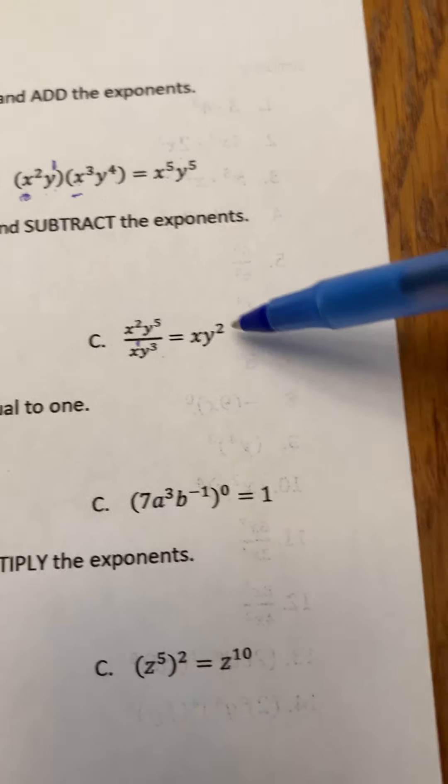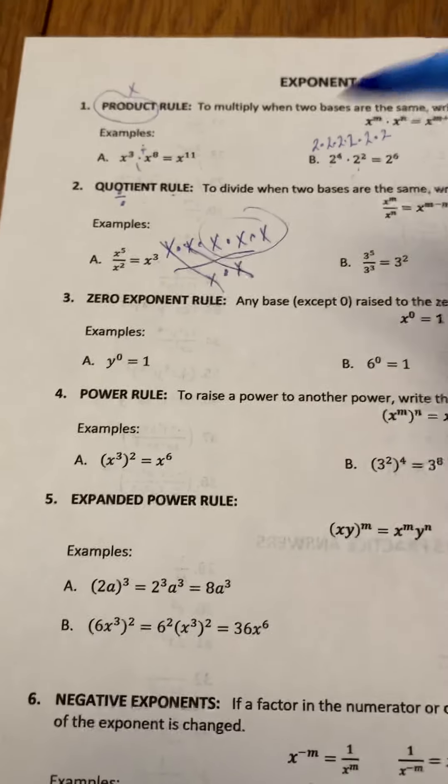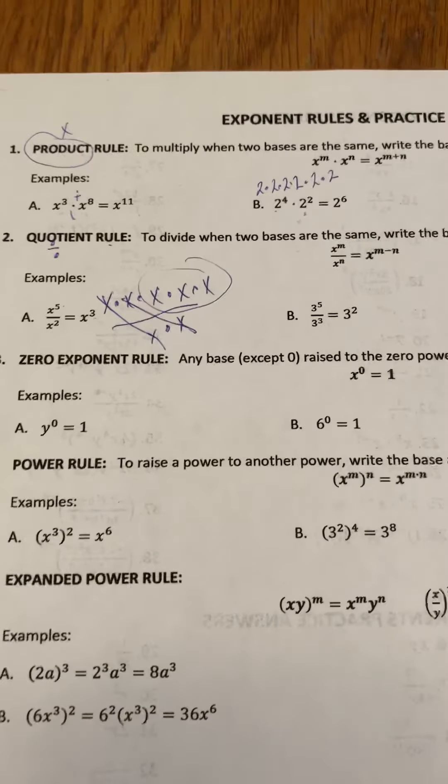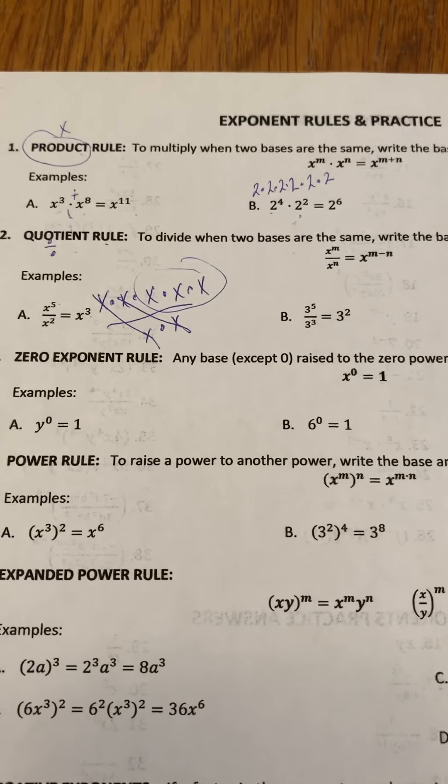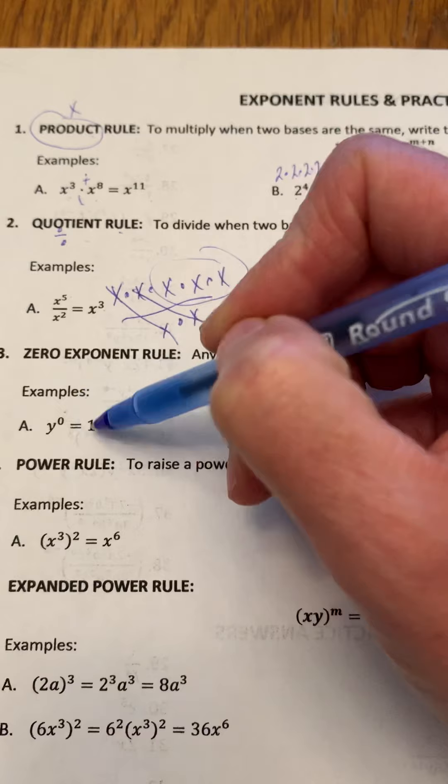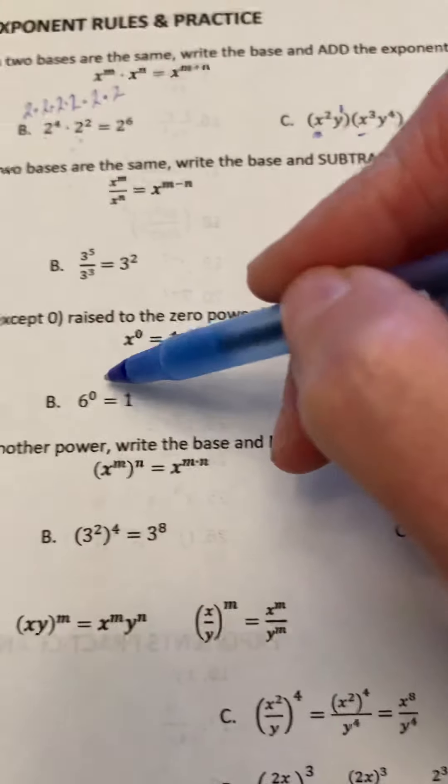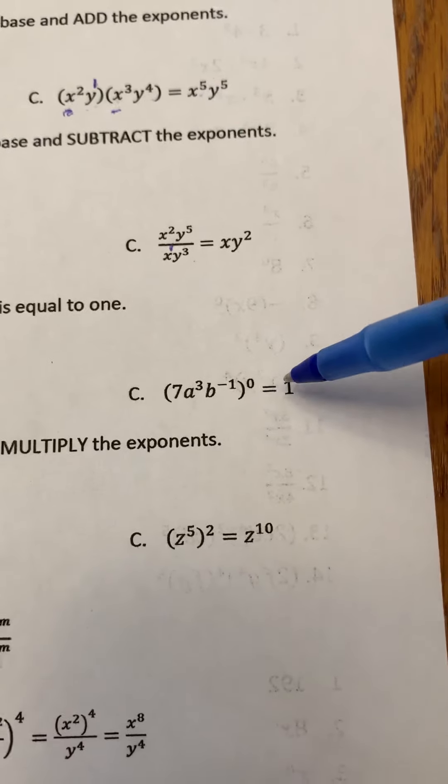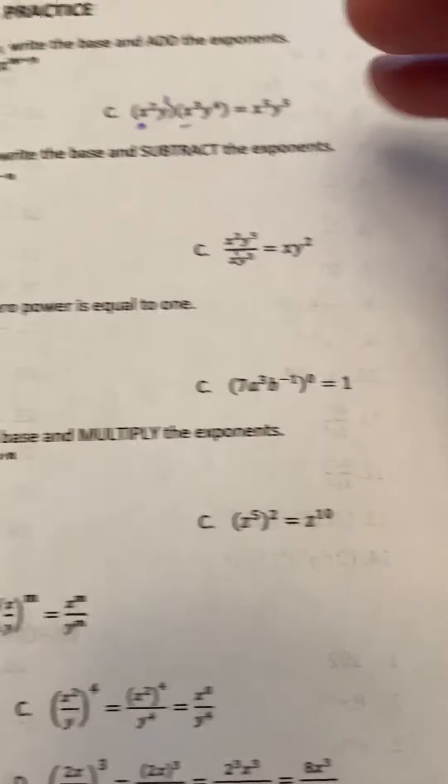This one's really important to me. We talked a lot about the zero exponent rule. Any base except 0 raised to the zero power is equal to 1. So anything raised to the exponent 0 is 1. 6 to the power of 0 is 1, and then all of this in brackets raised to the exponent 0 is simply 1. You don't have to worry about anything.